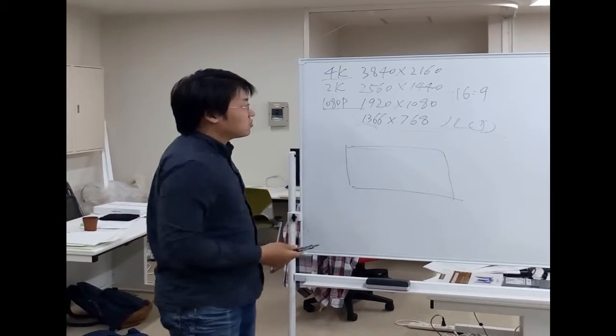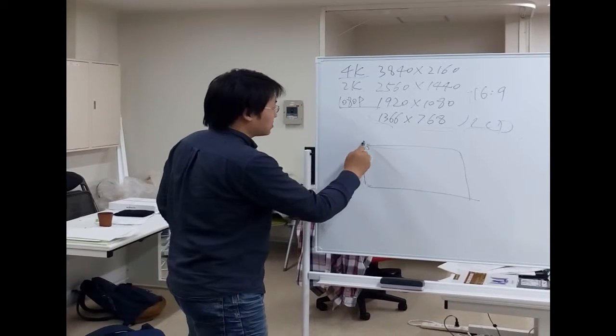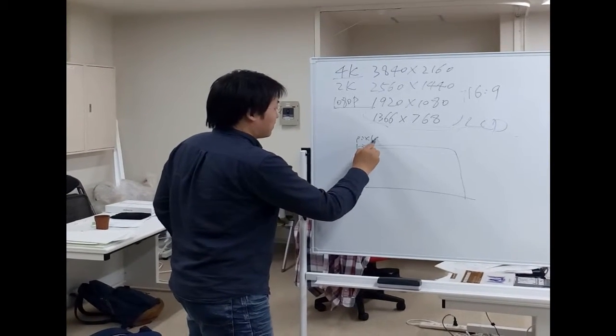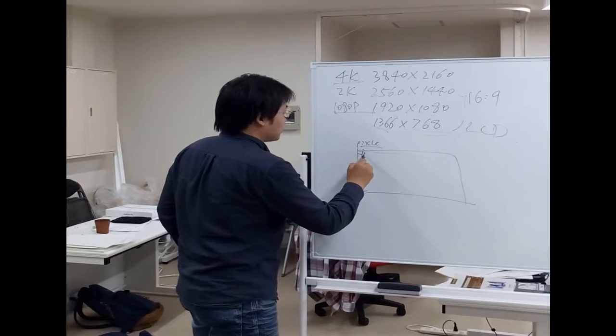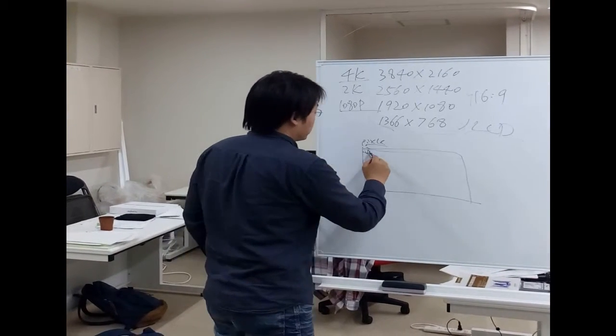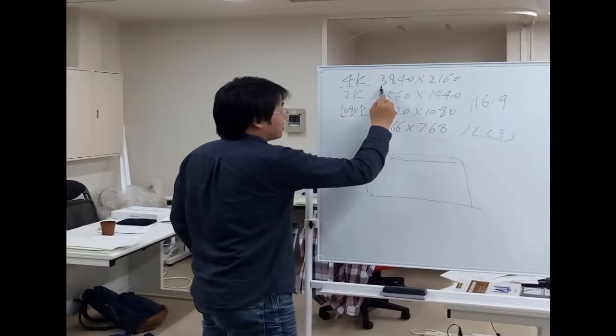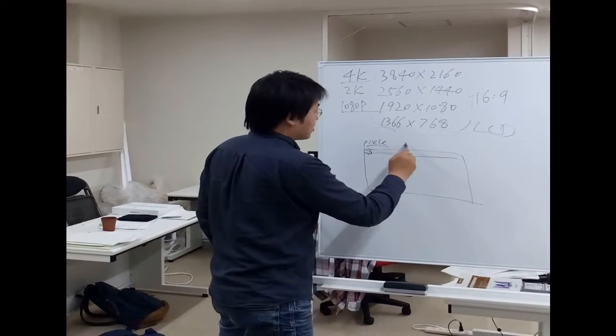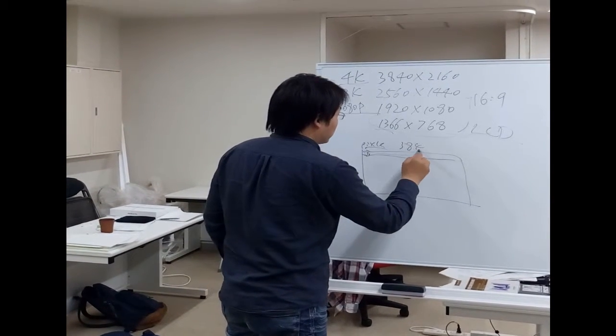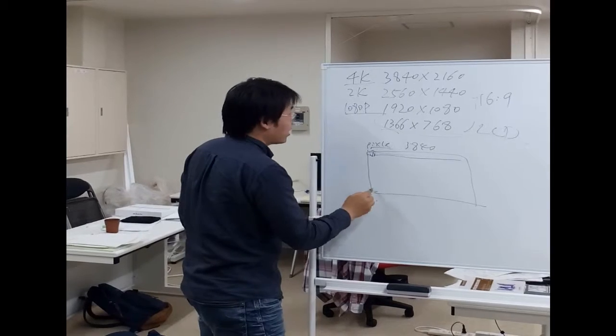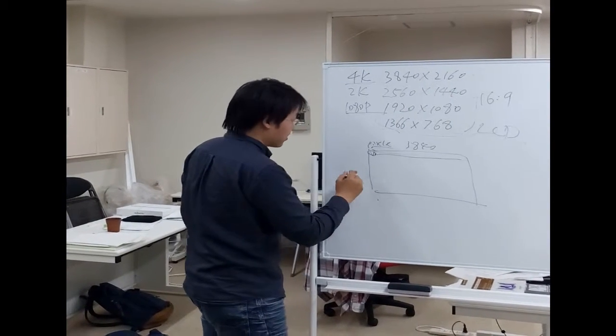This resolution means we have some pixels. One pixel is like a square. In the length, we have this number of pixels: 3840. And in the width, we have this number of pixels.